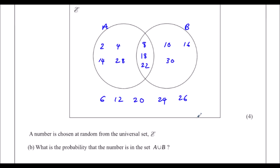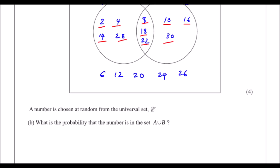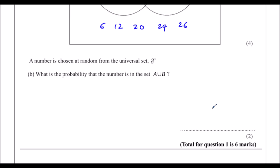A number is chosen at random from the set — so from all the numbers. What's the probability that the number will be in the union of A and B? The union of A and B means anything in A and anything in B. So all those numbers are in the union. We've got 10 numbers in the union out of 15 in total, so the probability is 10 out of 15. We can simplify to 2 thirds, but we can leave it as 10/15.